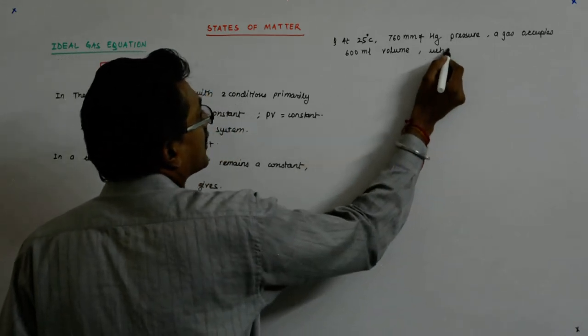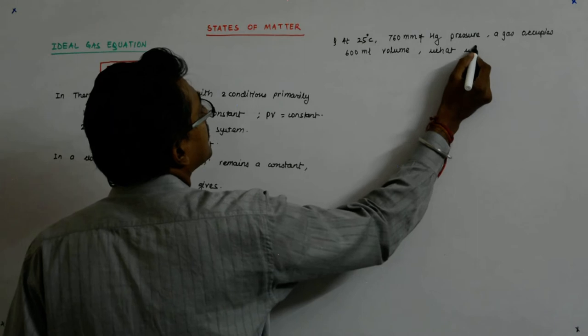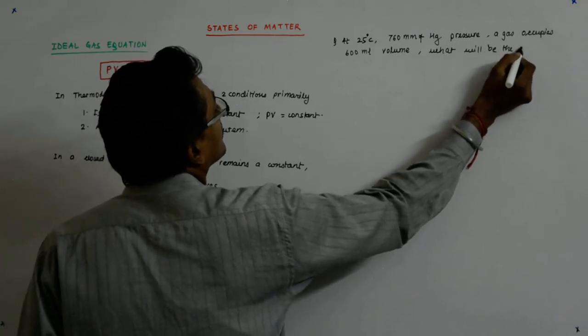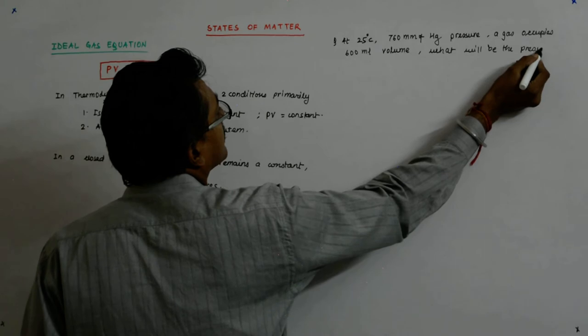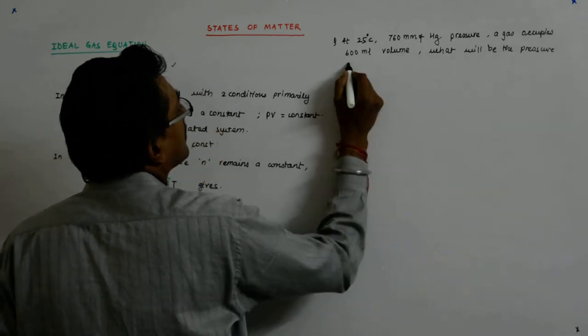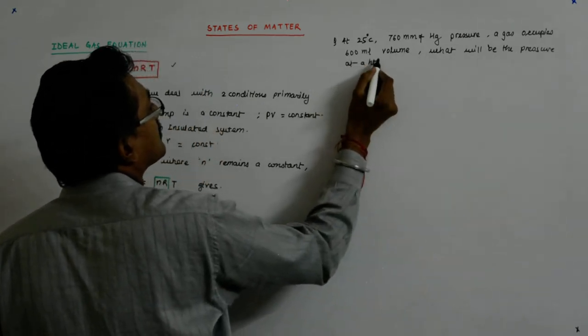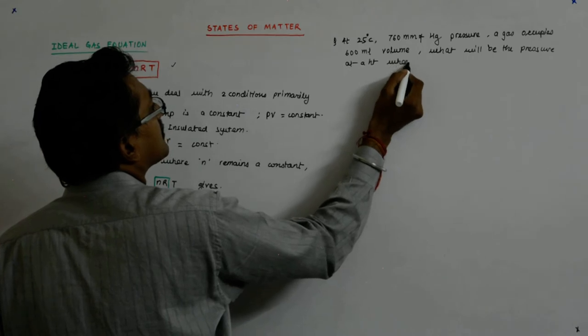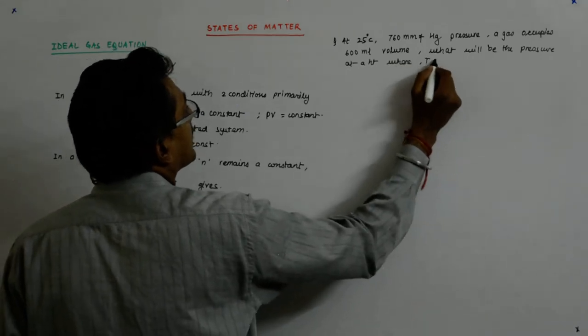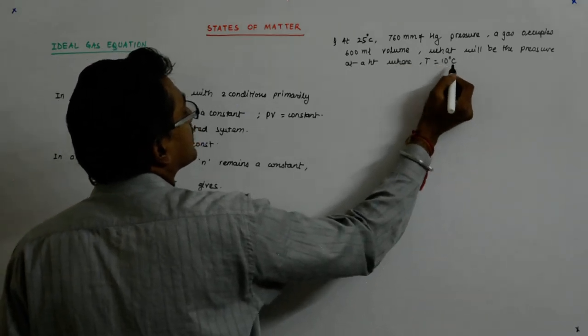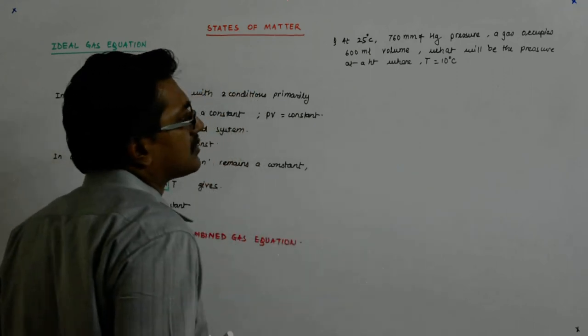What will be the pressure at a height where temperature is 10 degrees centigrade and volume of gas is 640 ml?